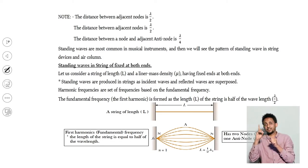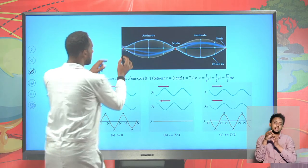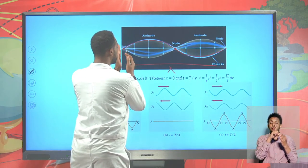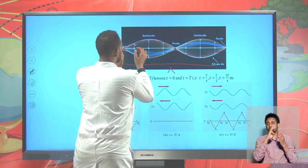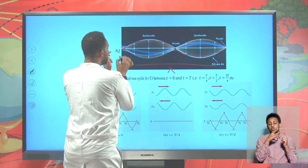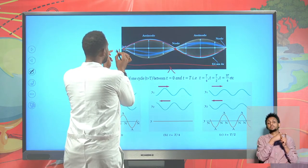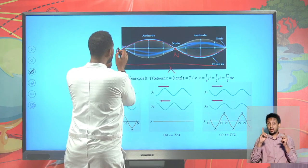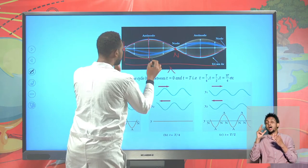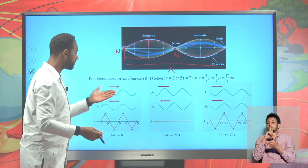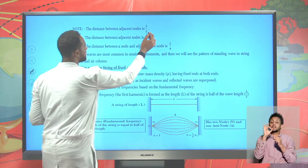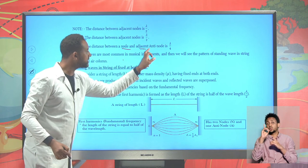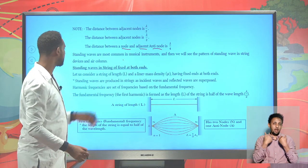Nodes and antinodes are the two types of points found in standing waves. The distance between two successive nodes or two successive antinodes can be mathematically expressed. For one complete wave of length λ, the nodes are found at points with no oscillation. The distance between two successive nodes is λ/2. Whereas the distance between a node and an antinode is λ/4.